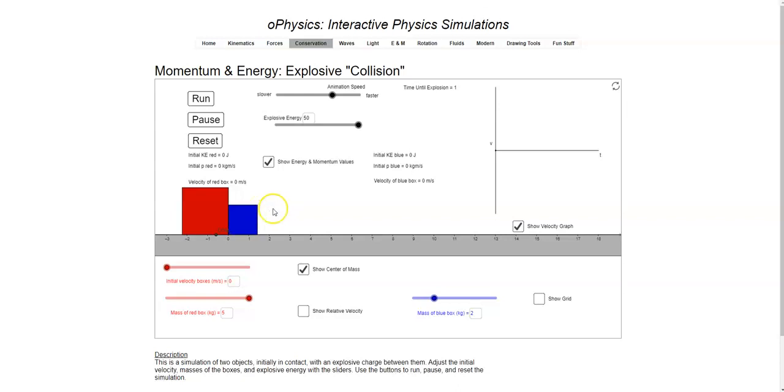So the main things we're interested in are changing the masses of the box, changing the explosive energy, maybe paying attention to what the momentum values are, and we want to make sure the initial velocity is zero because we don't deal with explosions that are already in motion. You can play with that if you want, but you're not going to see Regents physics problems like that. That's pretty much all of the features of the explosion app for conservation of momentum and energy.